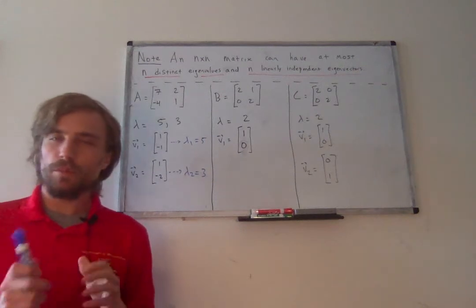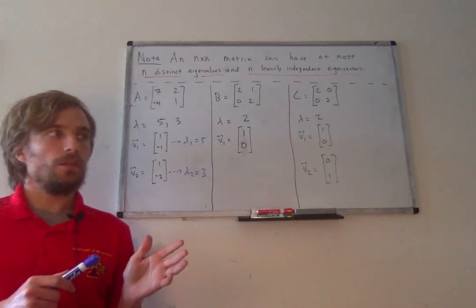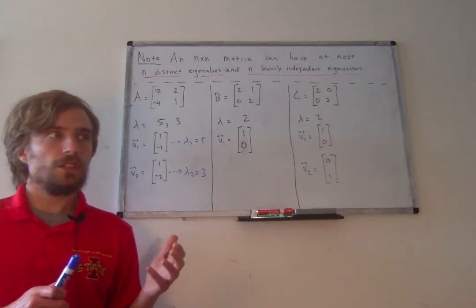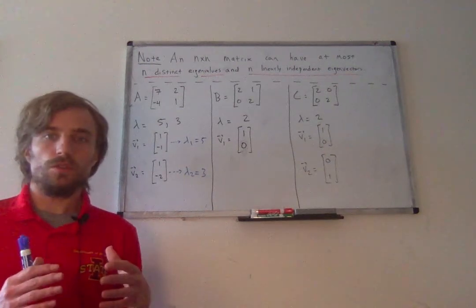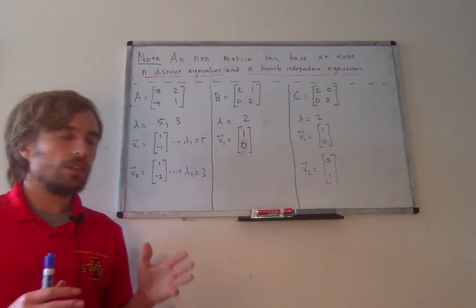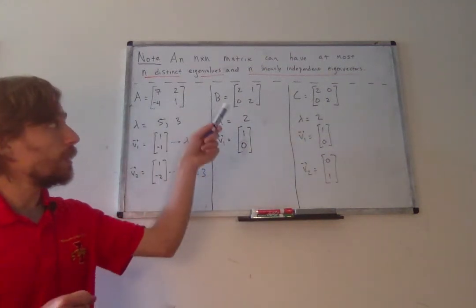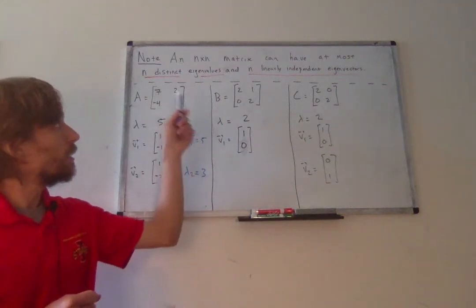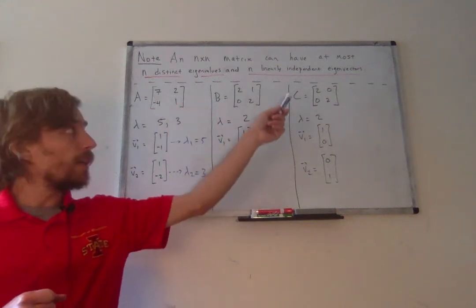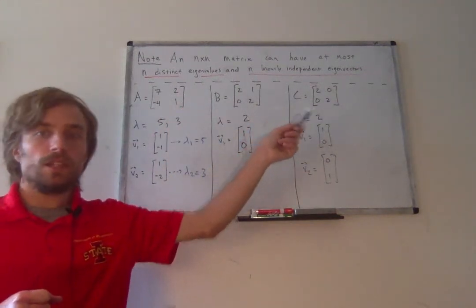This may have been mentioned at some point previously, or in your book, and I just failed to formally state it in the notes. So I wanted to quickly formally state it now: any n by n matrix can have at most n distinct eigenvalues and at most n linearly independent eigenvectors.